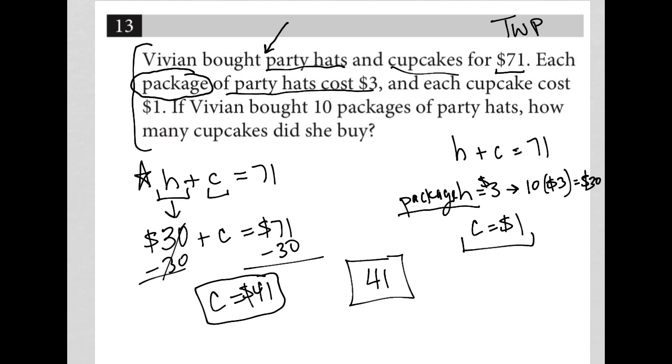H plus C equals 71. And if you follow along from there, you recognize the only information we're given regarding hats is that she spent $30, because $3 per pack and bought 10 packs. Then we're asked to find C and we're told the total amount she paid. So it has to be 41.